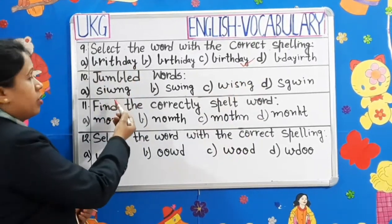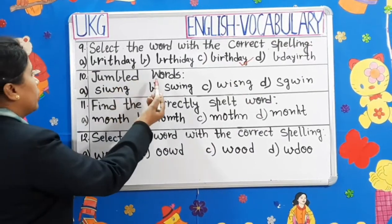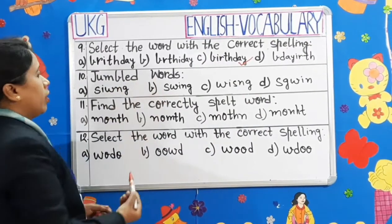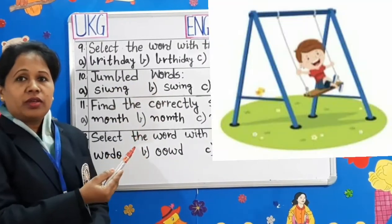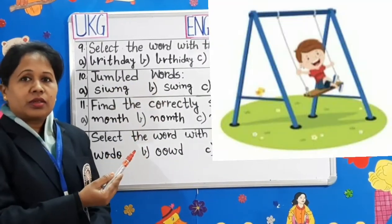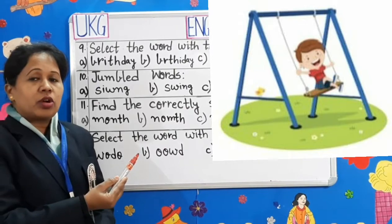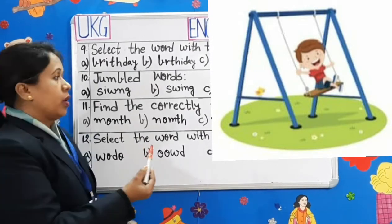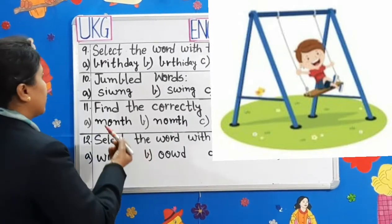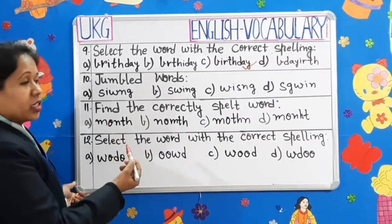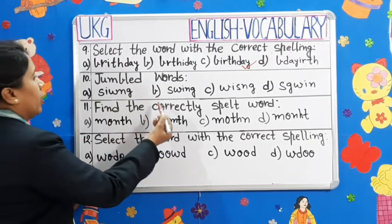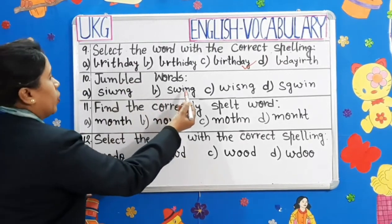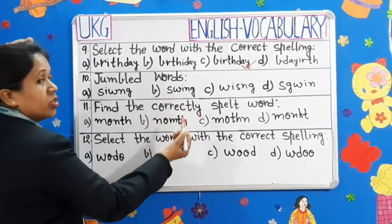Number 10: Jumbled words. Children, can you see the picture? Yes, it is a picture of a swing. Now, let's select the correct spelling of swing — S-W-I-N-G. Swing.